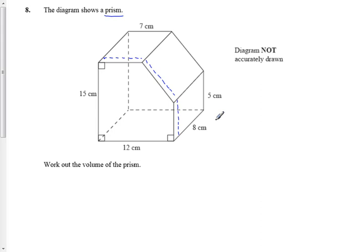So, to work out the volume of a prism, the volume of a prism is equal to the area of the cross section, or the area of the slice, the area of the cross section, times by how long it goes up.